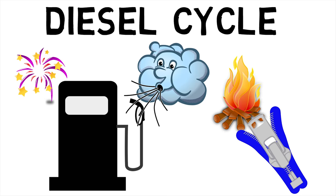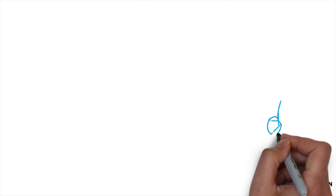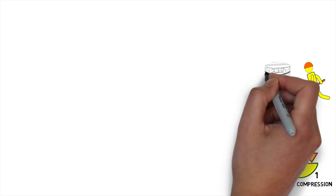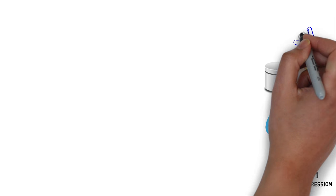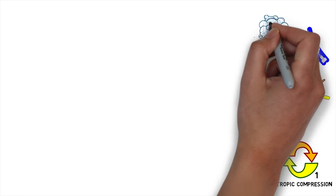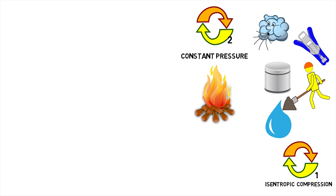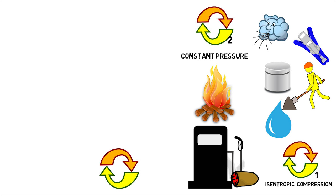It consists of the following processes. Process 1 is an isentropic compression of the fluid in the form of work done by the piston to compress the air. Process 2 is the reversible constant pressure heating wherein fuel undergoes combustion.